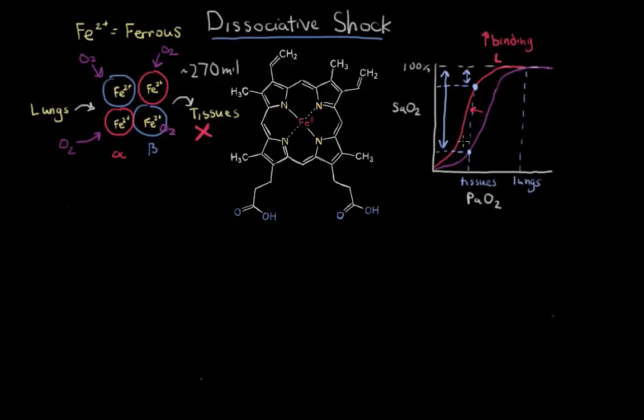Now let's get back to the topic at hand. What can cause a left shift in the oxyhemoglobin curve? Well there are two main causes of dissociative shock. And the first cause is methemoglobin. And if you have methemoglobin in your blood, it's known as methemoglobinemia. Emia means in the blood.